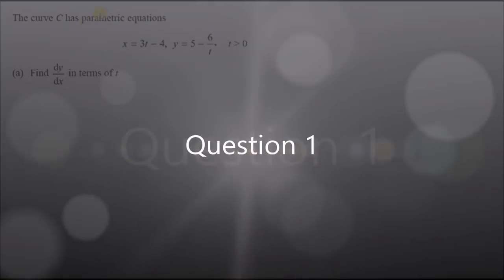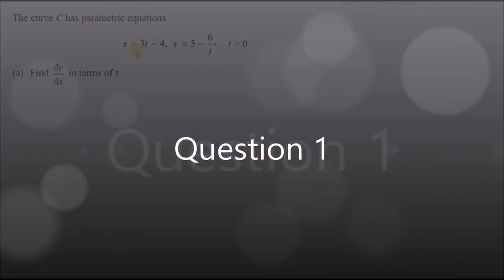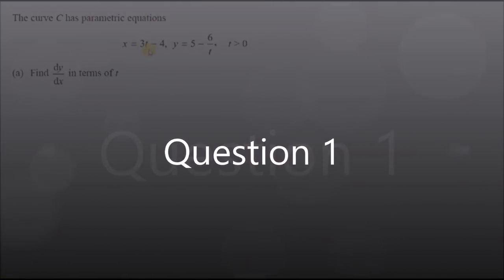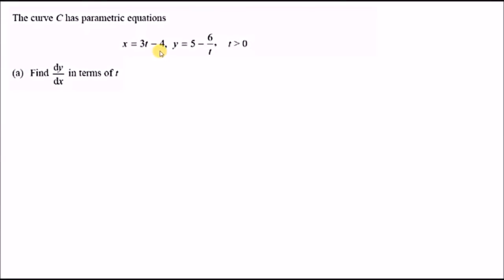The curve C has parametric equations x equals 3t minus 4 and y equals 5 minus 6 over t, where t is strictly positive. Part A: let's find the first derivative dy over dx in terms of t.